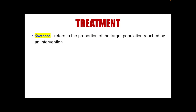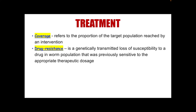Coverage refers to the proportion of the target population reached by an intervention — those individuals included in treatment or deworming. Drug resistance is a genetically transmitted loss of susceptibility to a drug in a worm population that was previously sensitive to the appropriate therapeutic dosage. In other words, anti-helminthic or other drugs previously effective to treat infection become ineffective because of continued use or abuse, meaning the parasite has developed resistance due to inappropriate use.